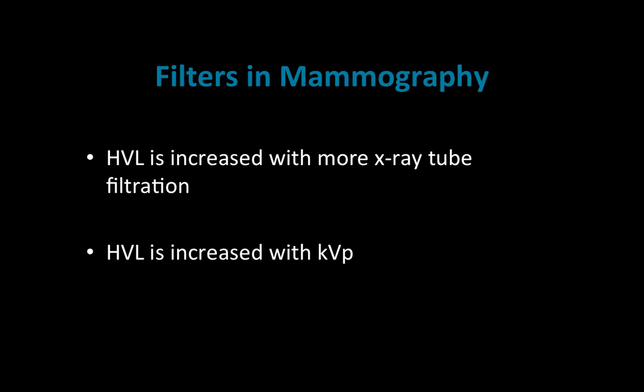Why is this important? Why don't we just increase kVp to achieve the desired increase in half value layers? We already know that decreases our radiation dose. However, the reason we gain a benefit in radiation dose — and why people use half value layers to ensure our X-ray beam is adequate — is because we know we're filtering low energy X-rays.